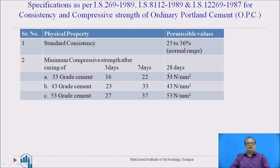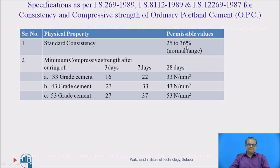There are specifications laid down by different IS codes for different grades of cement. For 33 grade of cement, IS 269:1989 gives standard specifications. The standard consistency normal range generally lies between 25 to 36 percent. The compressive strength after curing of 3 days for 33 grade cement should be minimum 16 N/mm². After 7 days of curing it should be 22 N/mm², and after 28 days it should be 33 N/mm². These are the minimum values.